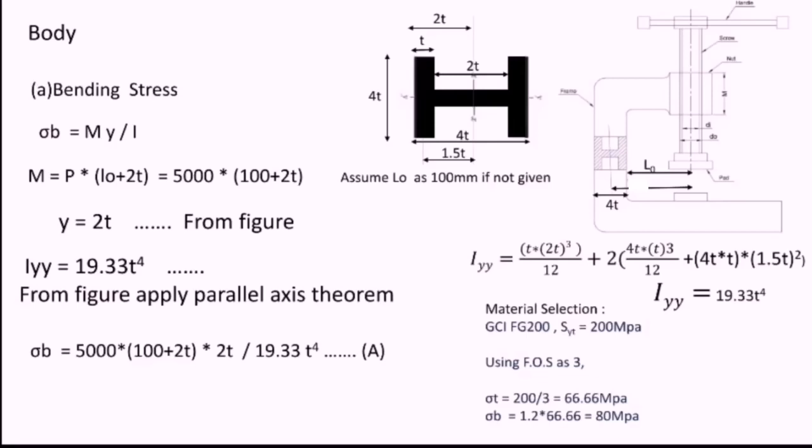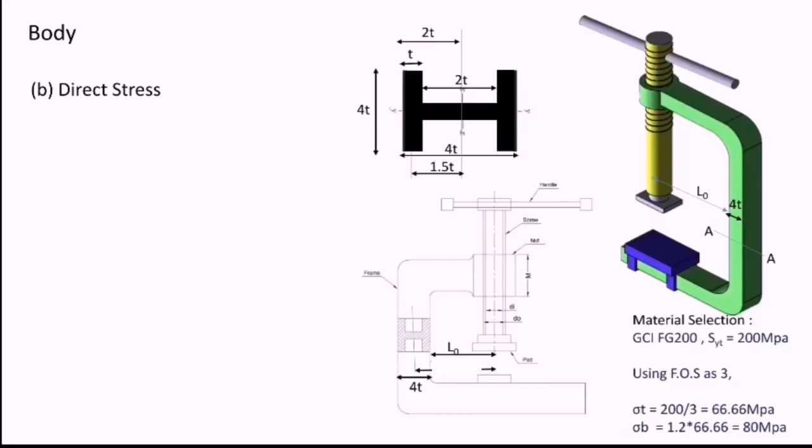Now, let us compute the direct stresses acting on the body. For direct stress, we have the relation σD = W/A, where A is area of the section. From the diagram, we can calculate the area of section as 10t². Substituting the value, I will get σD = 5000/(10t²).